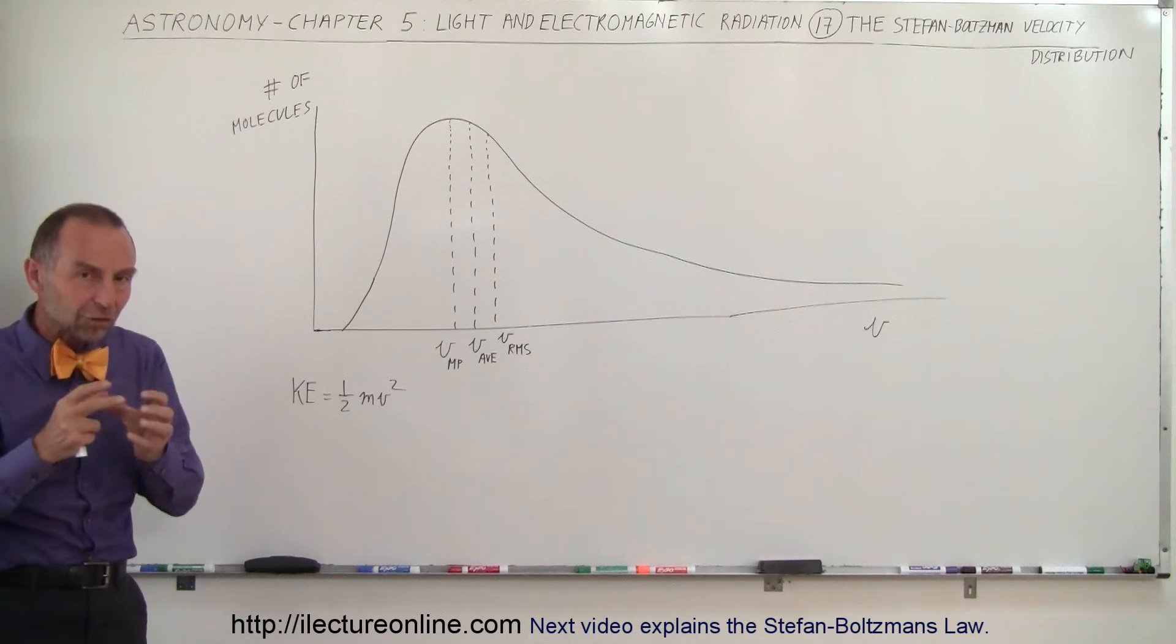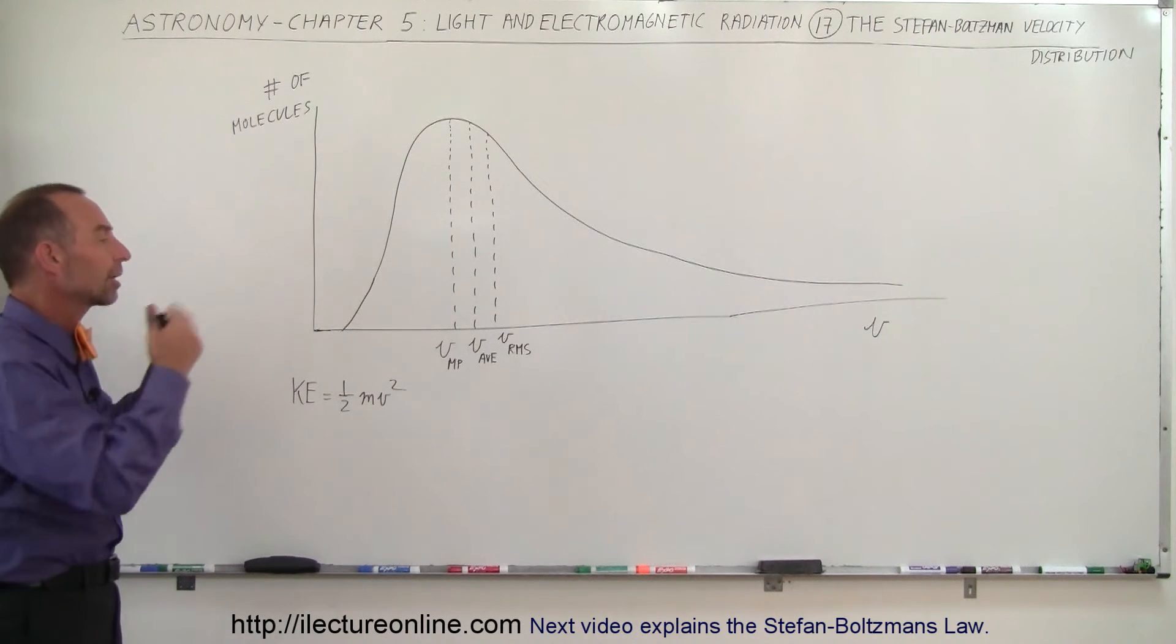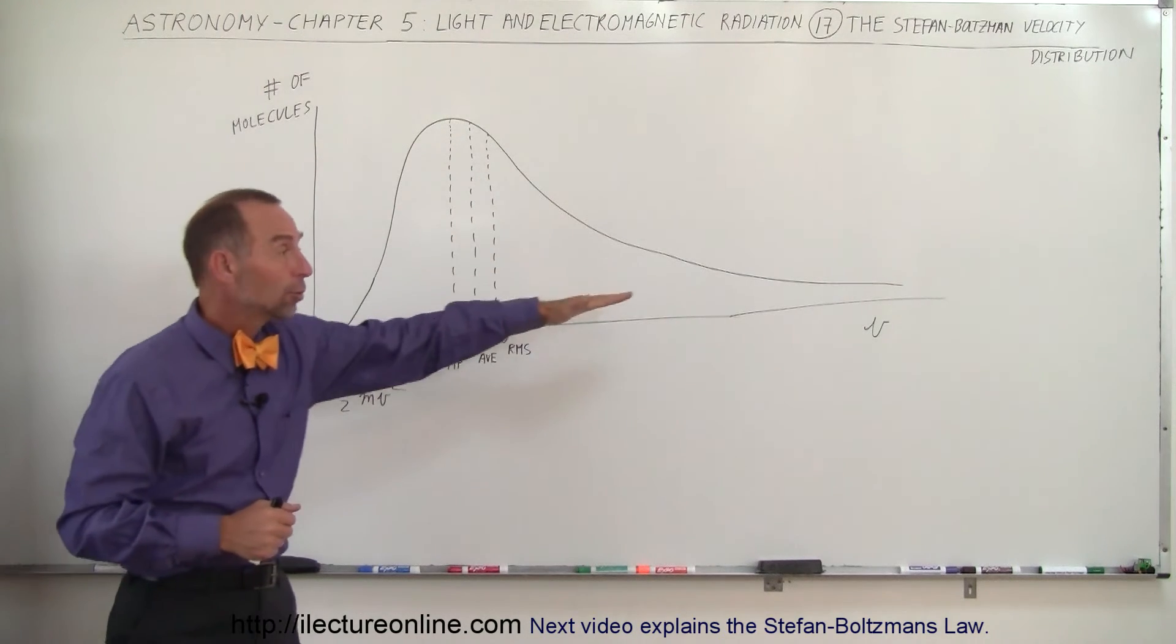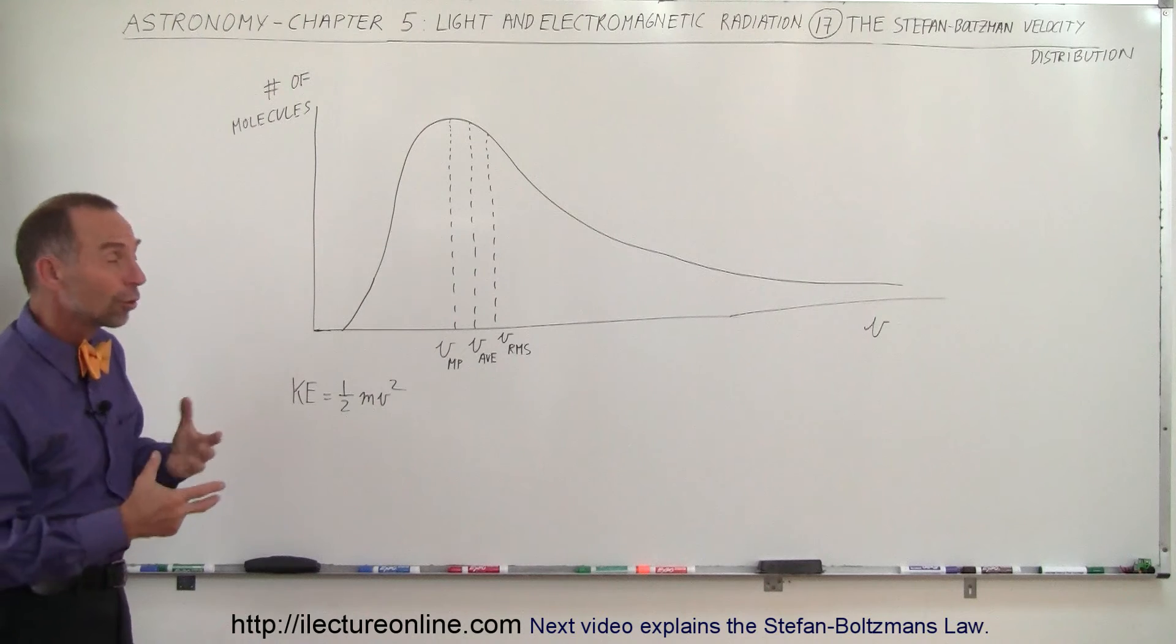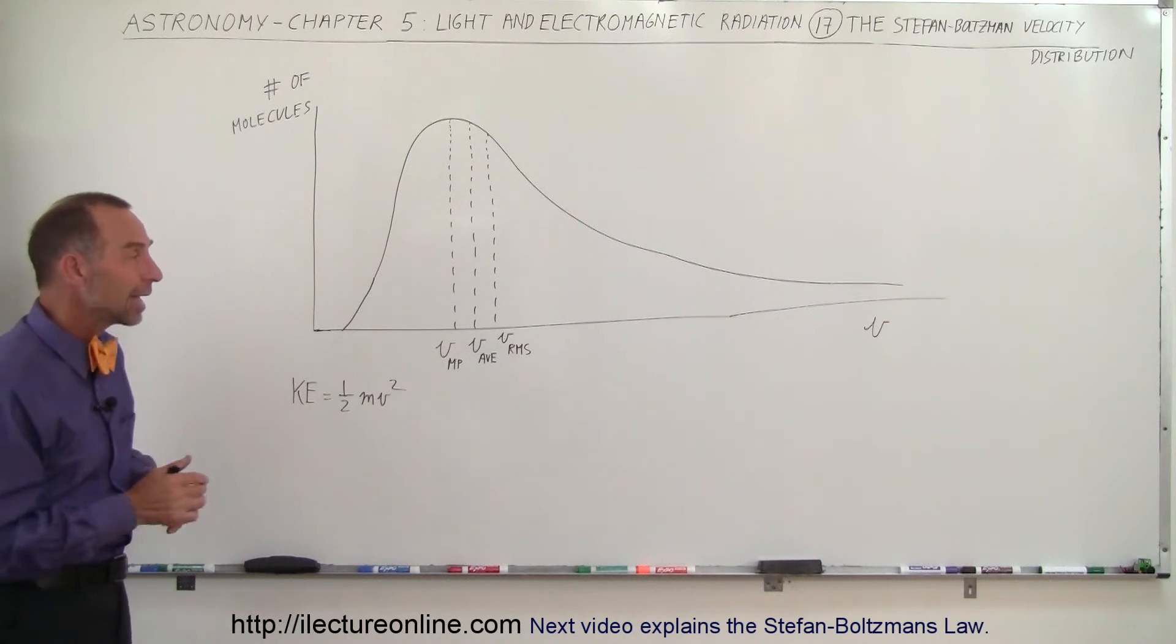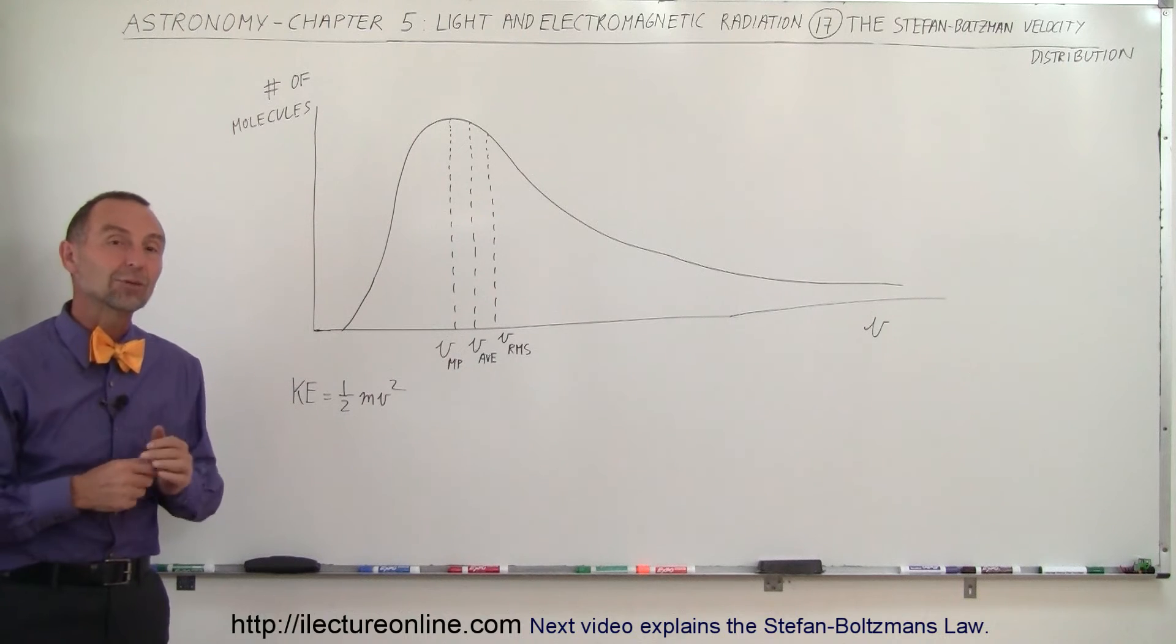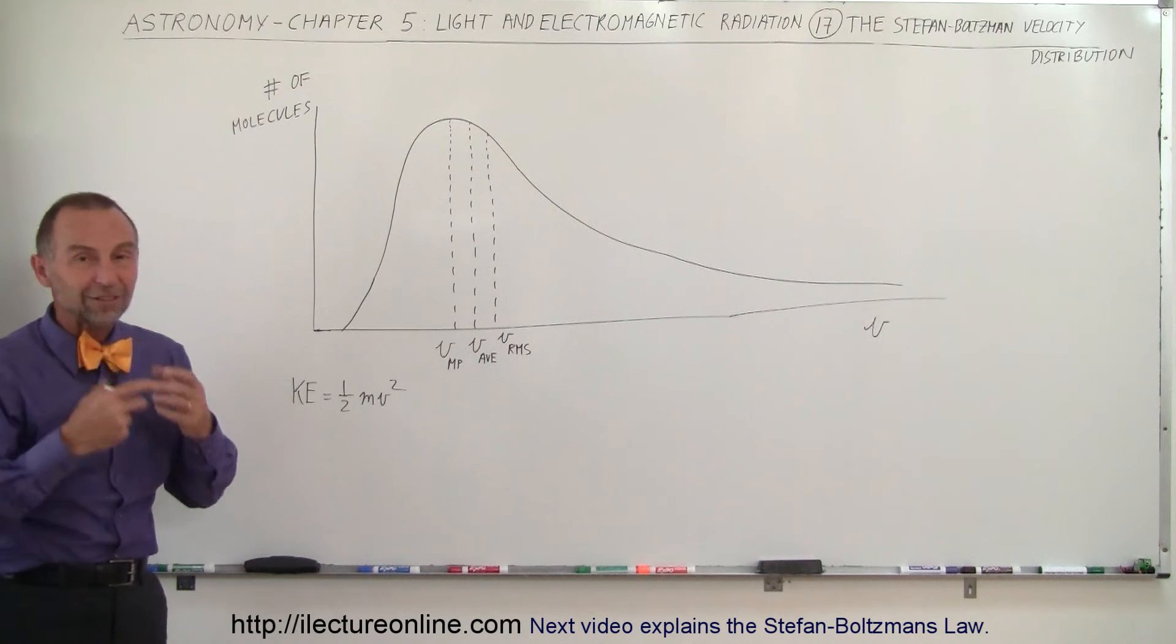So it's again the thermal action of the atoms in the gas that cause that electromagnetic radiation. And you can see that there is a very close relationship between the velocity curve and the radiation curve. Therefore, the similarity again, high-moving atoms would cause higher energy radiation, shorter wavelengths, higher frequencies.